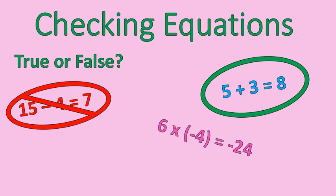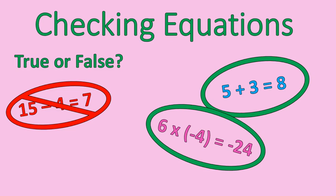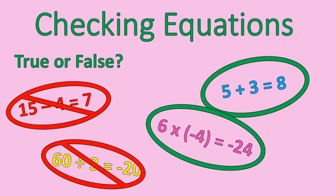Let's do one with multiplication. 6 times negative 4 is equal to negative 24. What do we think about that one? Yeah, that's true. A positive times a negative gives you a negative. 6 times 4 is 24, so we're in good shape for that one. And our final equation: 60 divided by 3 is equal to negative 20. 60 divided by 3 is 20, but it would be a positive 20 when you take a positive divided by a positive. So again, what's on the left side is not equal to what's on the right side. This is not a true equation. So that's basically the process of checking equations.